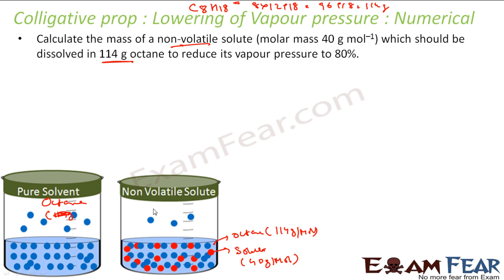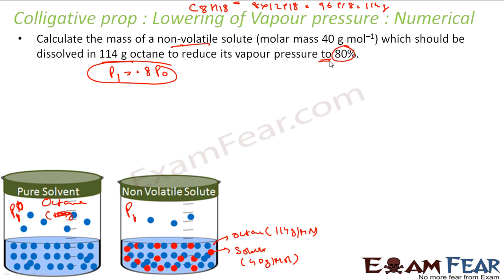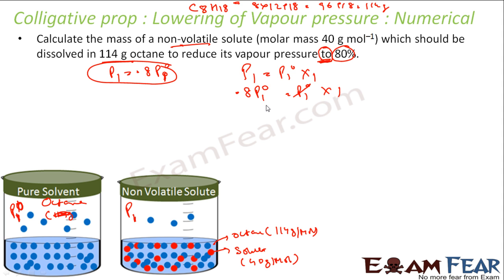The question asks to reduce vapor pressure by 80 percent — that means P1 has to be 0.8 × P0. Please note it is reduced TO 80 percent, not BY 80 percent. From Raoult's law: P1 = P0 × x1. Substituting, P0 cancels and the mole fraction of octane x1 becomes 0.8.